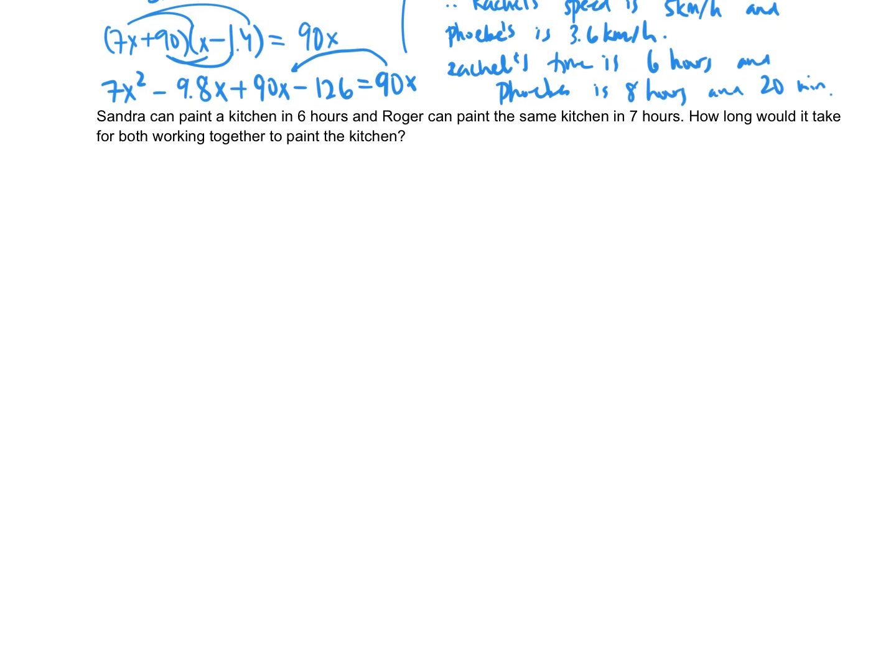Next. Sandra can paint a kitchen in 6 hours. Roger can paint the same kitchen in 7 hours. How long would it take for both working together to paint the kitchen? Okay, let's start with the let statement. Let x represent time it takes for both of them to paint the kitchen.